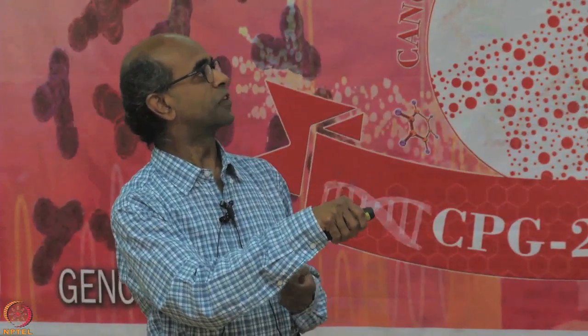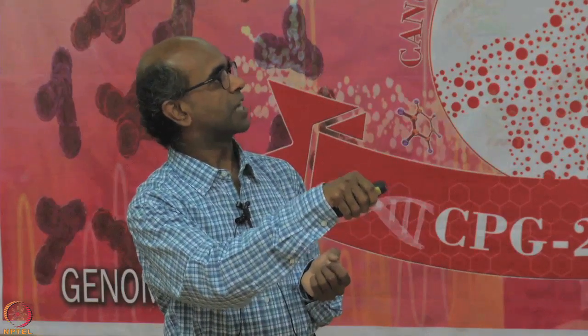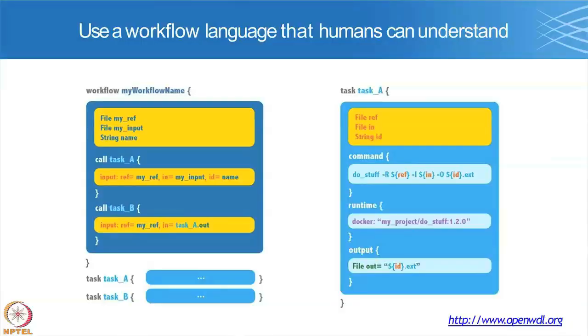Once you have defined your workflow, you define what your tasks are. Each task has inputs and a command. Many of these tools are based on command-line programs, so to use them in WDL and FireCloud you need to be able to run your algorithm via a command-line invocation. The task also specifies where it is run — in a docker container — and what output it creates, which other subsequent tasks can then use.